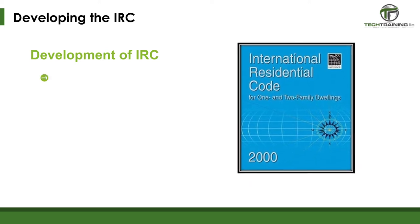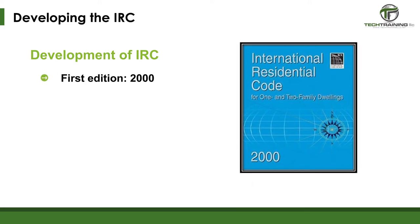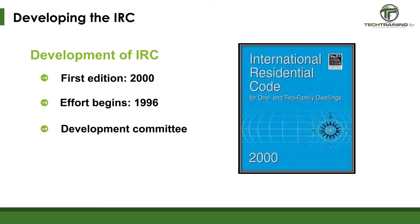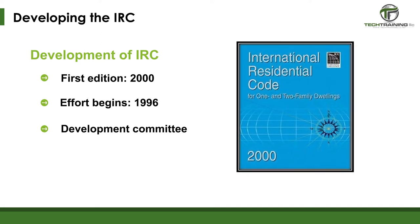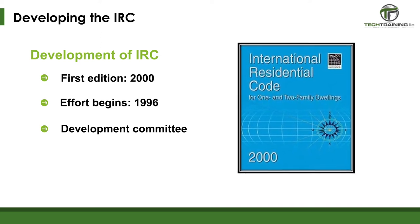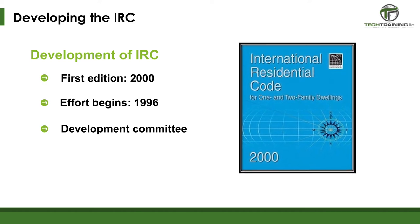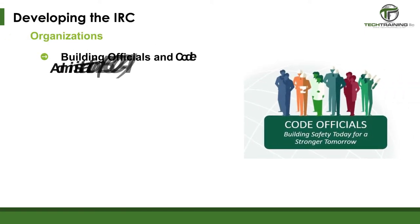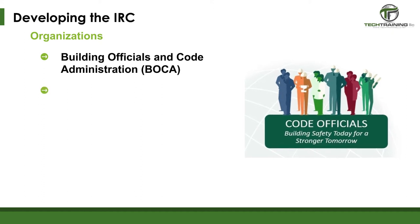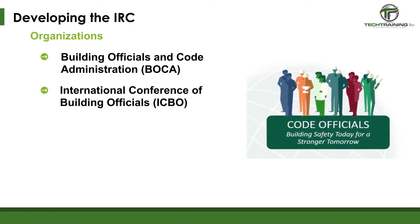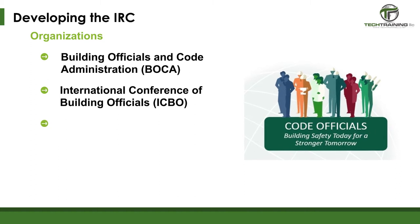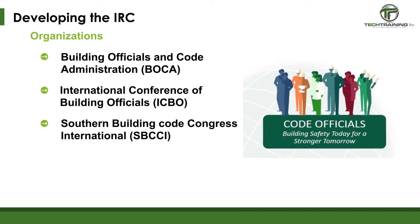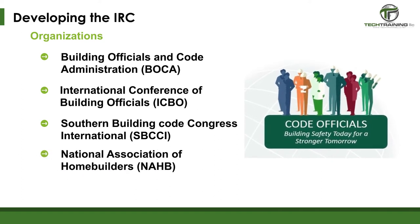The first edition of the International Residential Code was issued in the year 2000. It was the result of an effort which began in 1996 by a development committee approved by the ICC. This development committee consisted of representatives from the three statutory members of the International Code Council at that time: the Building Officials and Code Administration, or BOCA, the International Conference of Building Officials, or ICBO, and the Southern Building Code Congress International, or SBCCI, as well as representatives from the National Association of Home Builders, or NAHB.